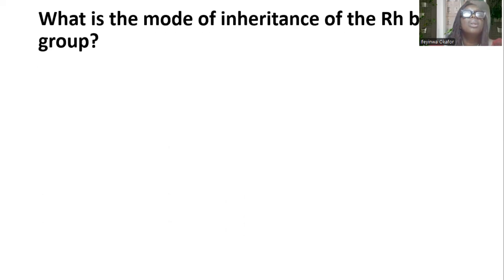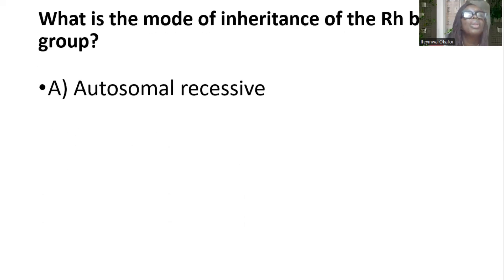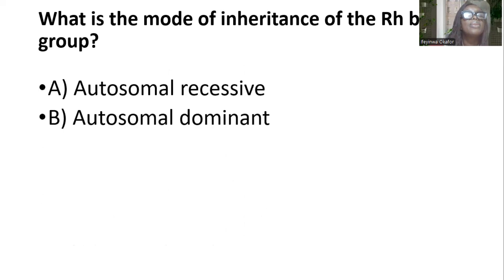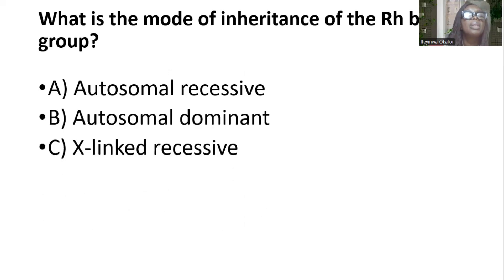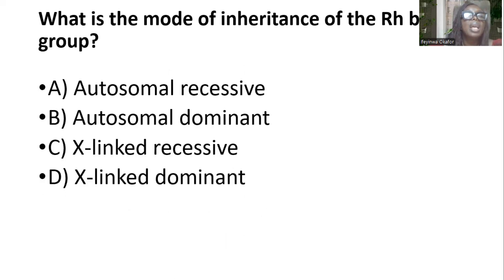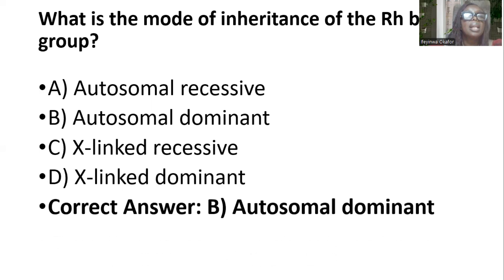What is the mode of inheritance of the RH blood group? Options are autosomal recessive, autosomal dominant, X-linked recessive, and X-linked dominant. And the answer is autosomal dominant.